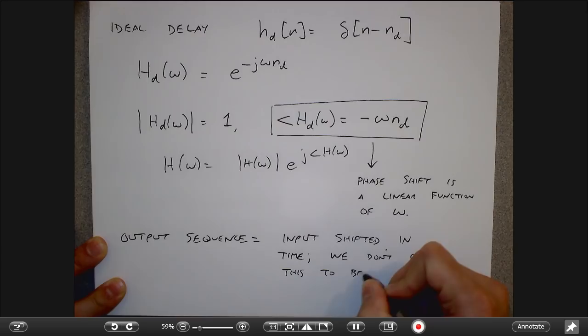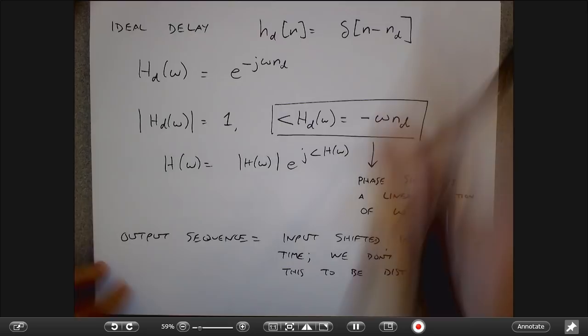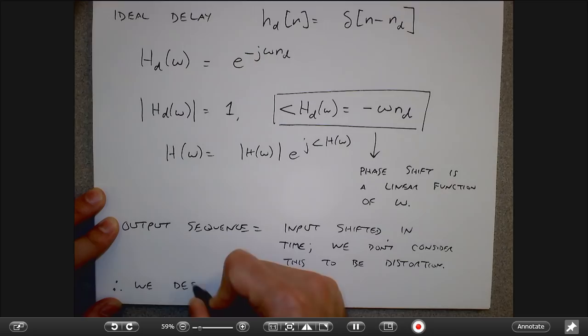In many cases we cannot achieve exactly zero phase, meaning the output occurs at exactly the same time as the input. Instead, what we are willing to tolerate is linear phase, which means the output is just delayed by a few units from the input. That's the idea behind the desirability of linear phase filters — we desire filters with linear phase.